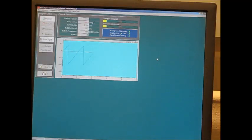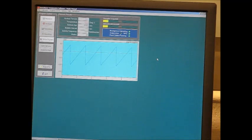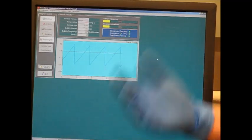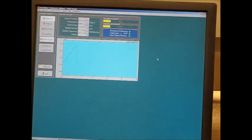You want to allow the sample to be continuously tested for 30 to 45 seconds before taking the reading. The surface tension should be stabilized at this time. After you read a stabilized surface tension reading, you're going to repeat this experiment with kerosene and then surfactant.